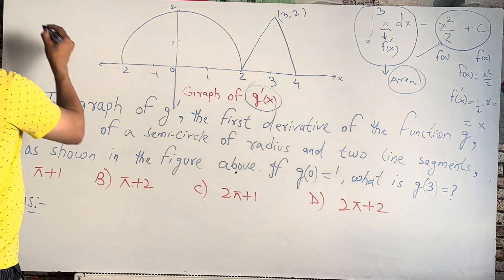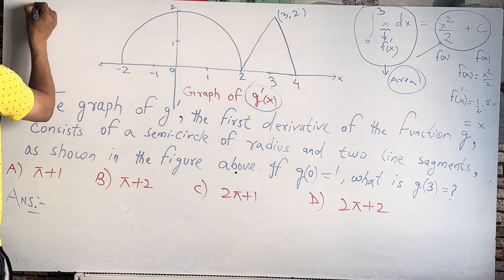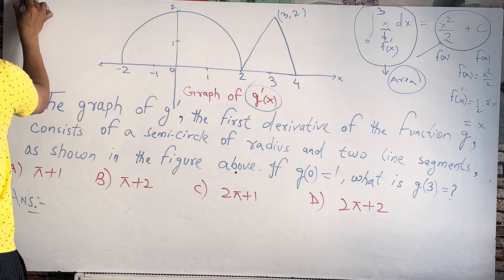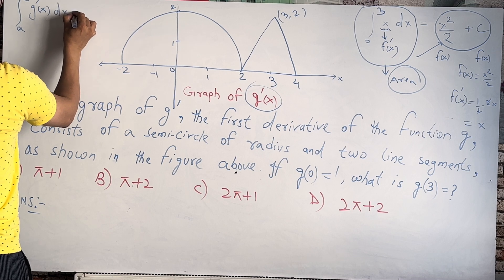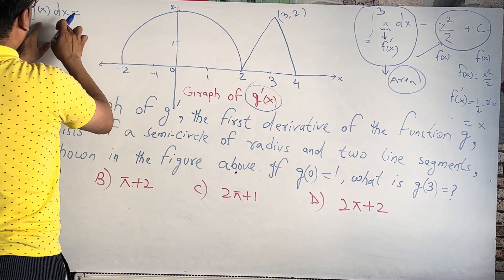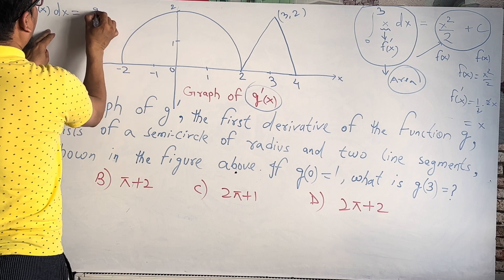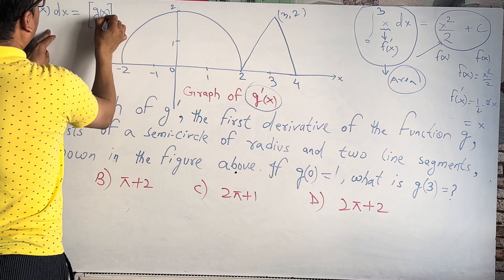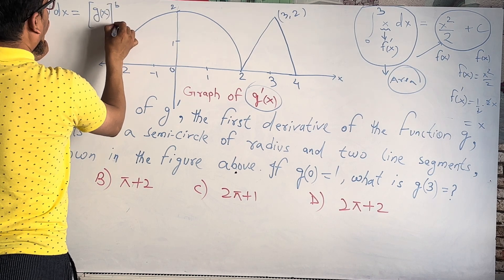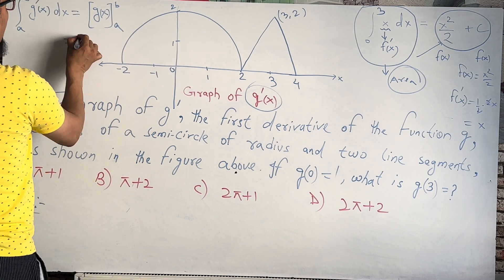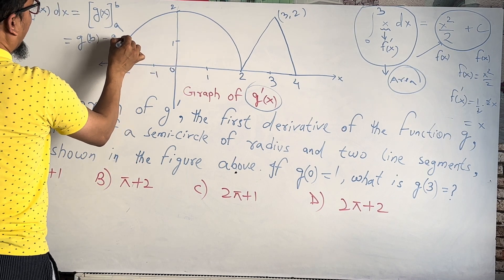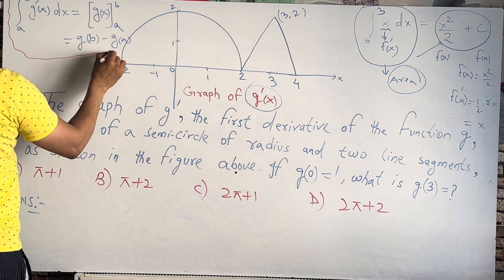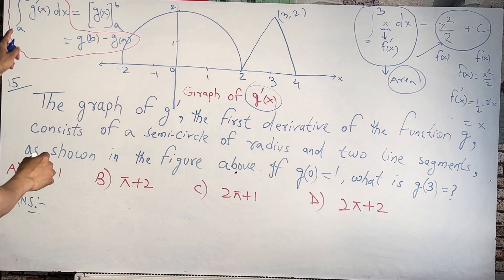The First Fundamental Theorem of Calculus states that if you have the integral from A to B of G prime of X dx, and we find the function G(X), then the result is G(B) minus G(A). This gives us a specific result — this is the first fundamental theorem of calculus.